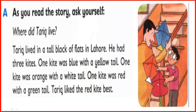Have you ever been to Lahore? Good, you have been to Lahore. Where did Tariq live? Tariq lived in a tall block of flats in Lahore. He had 3 kites. One kite was blue with a yellow tail, one kite was orange with a white tail, one kite was red with a green tail. Tariq liked the red kite best.